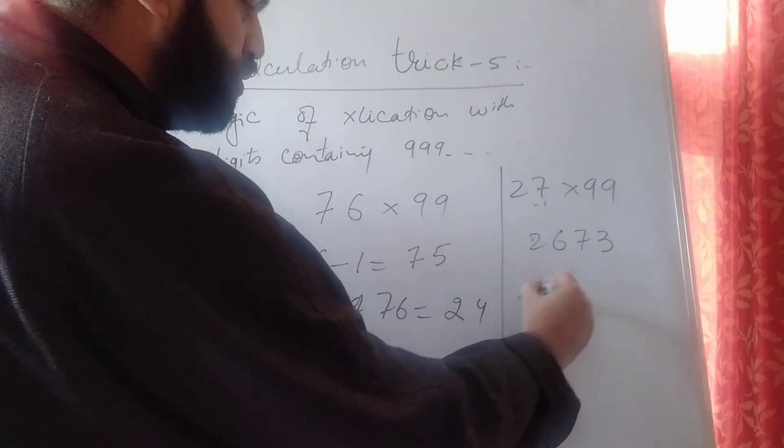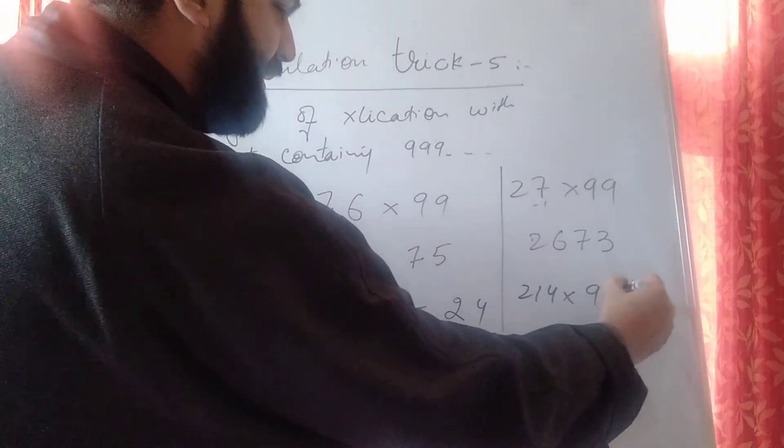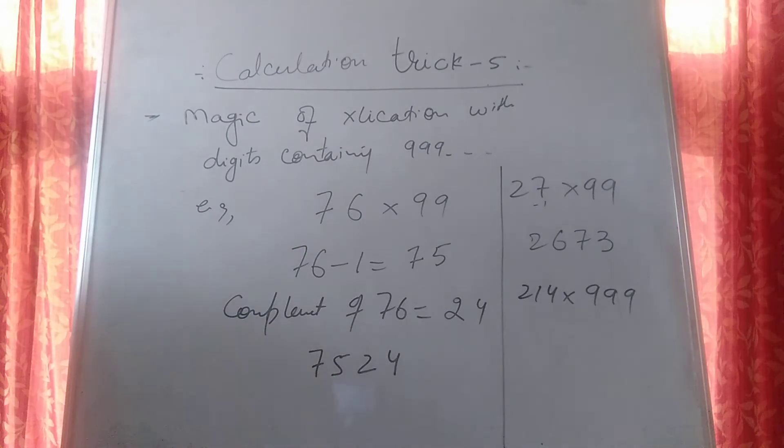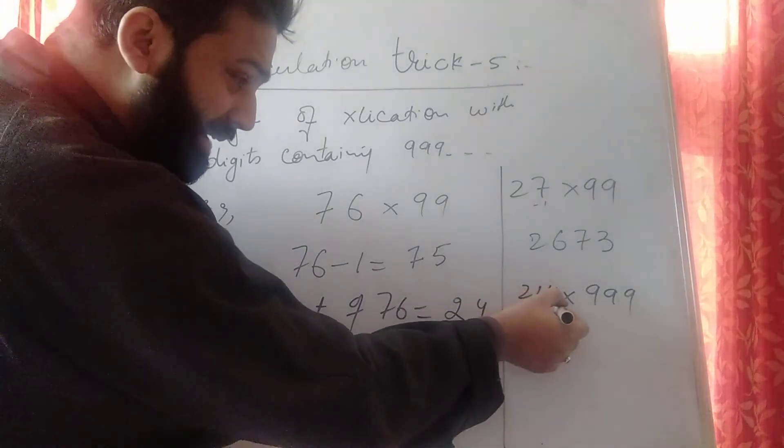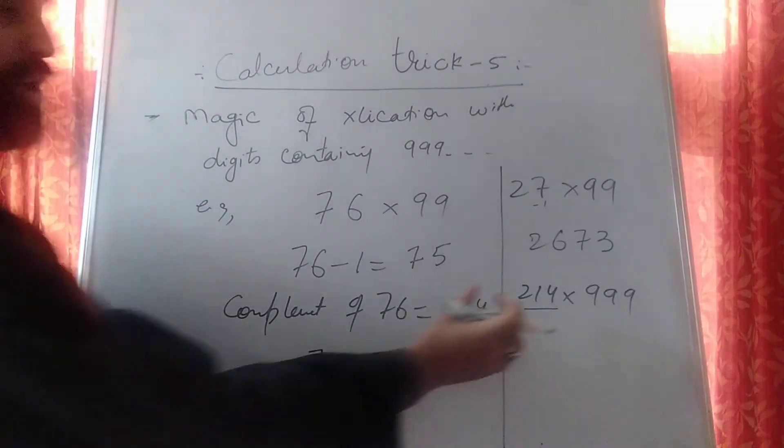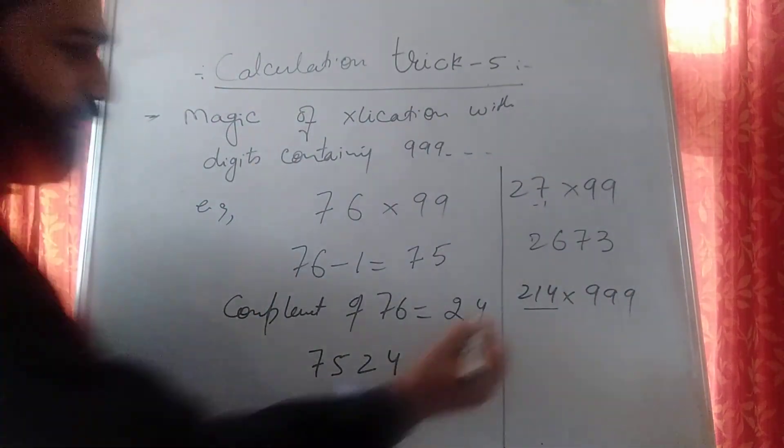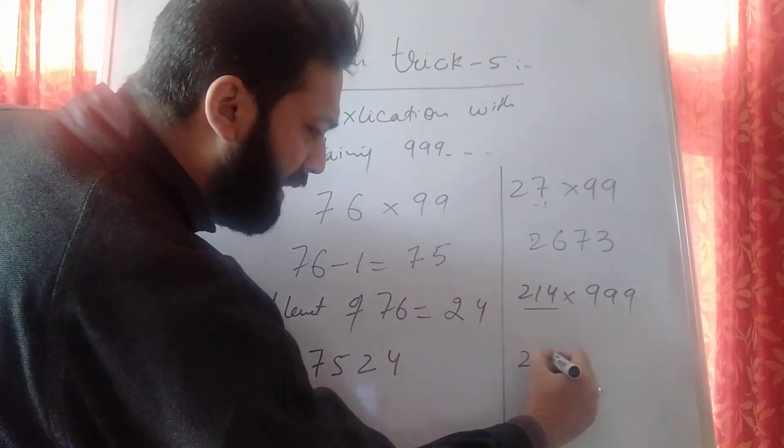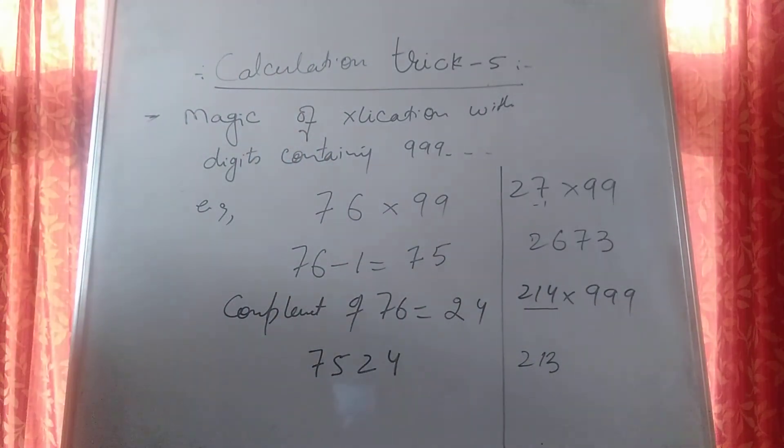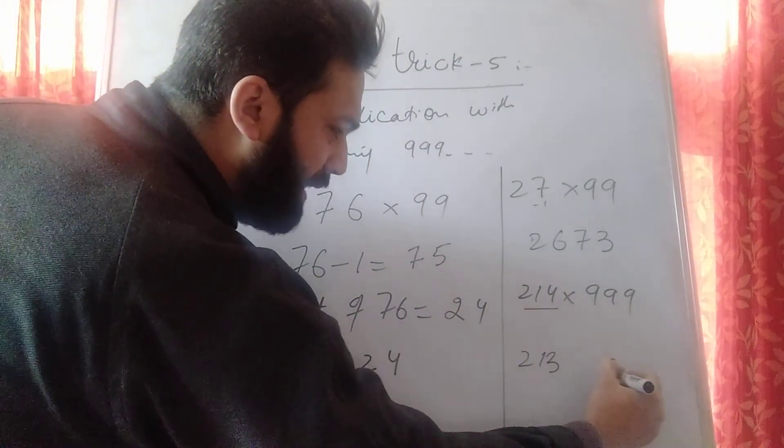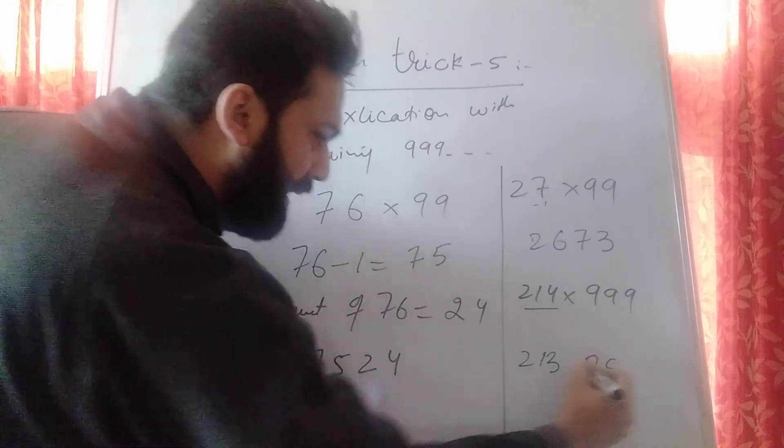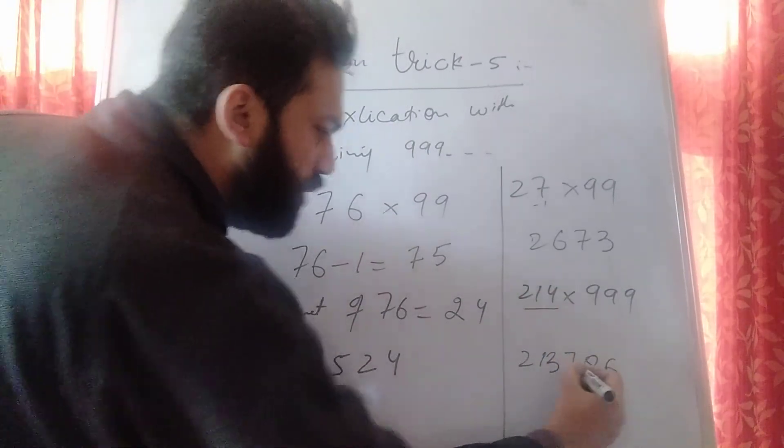Take a number 214 multiplied with 99. Keep saying I am taking the first case. Number of digits are equal to number of 9. Look here quickly. What is 214 minus 1? It's 213. What is 10 minus 4? It's 6. 9 minus 1? 8. 9 minus 2? 7.